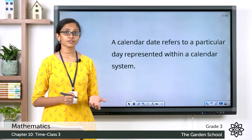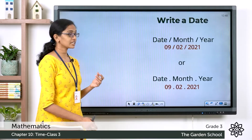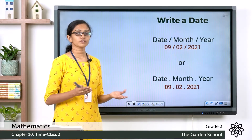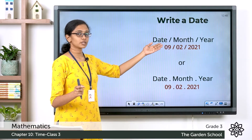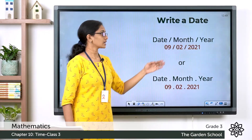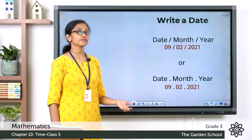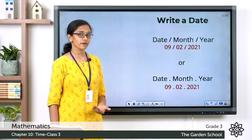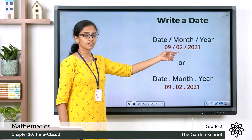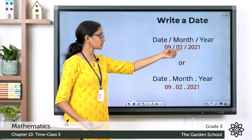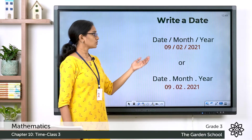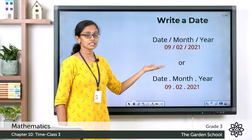How do you represent a date? How do you write a date? There are different ways to write a date, but we commonly use these two formats. When you write a date, first you write the date of that particular day, then the month, and then the year with slashes in between. So if today is the 9th of February, we write it as 9 slash 02 slash 2021.